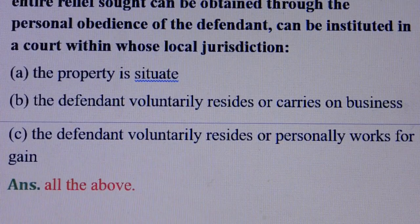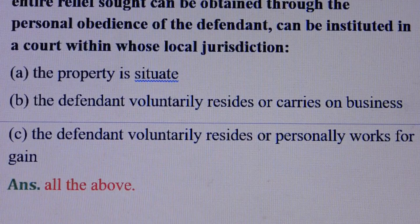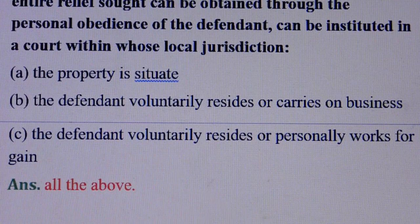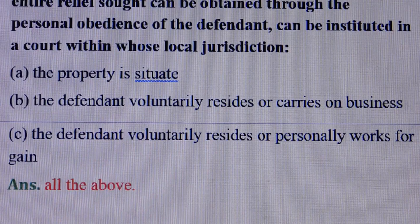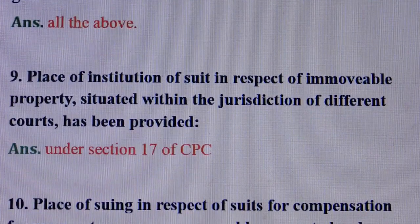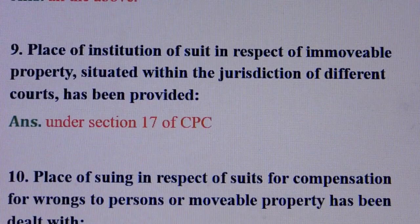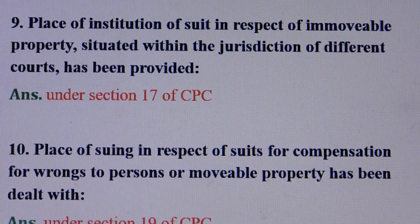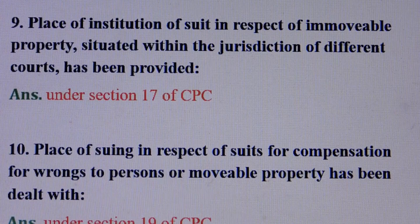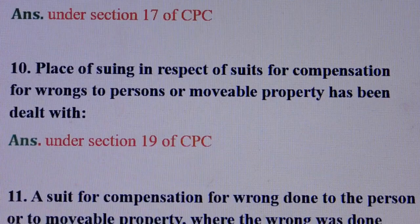The options for Question 8 mean: Option A — the property is situated; Option B — the defendant voluntarily resides or carries on business; Option C — the defendant voluntarily resides or personally works for gain. Question number 9: Place of institution of a suit in respect of immovable property situated within the jurisdiction of different courts has been provided — answer is: under section 17 of CPC.